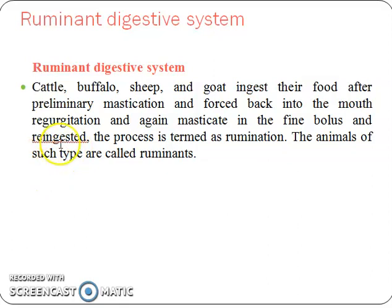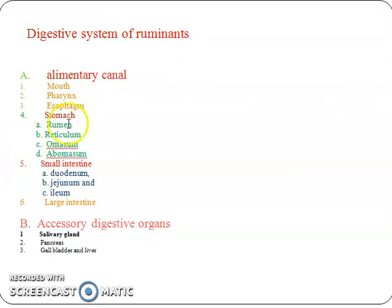Ruminant digestive system: cattle, buffalo, sheep, and goat ingest their food after preliminary mastication, then force it back into the mouth through regurgitation, and again masticate it into fine particles and re-ingest it. This process is termed rumination. Animals of this type are called ruminants.